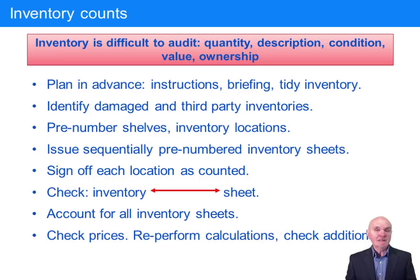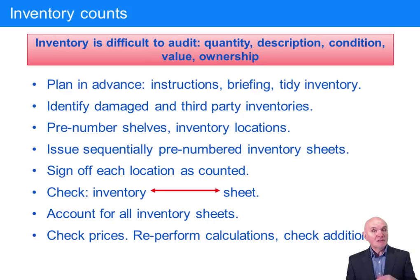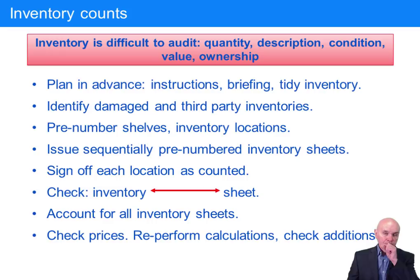A very common type of exam question is what auditors should do if they're asked to attend and observe a physical stock take. Many businesses try to keep a book stock, but really the best evidence you can get about the inventory which is truly present at year-end and its condition is to do a stock take at year-end — let's say on the 1st of January. This is nearly always assigned to the most junior member of the team, as the 1st of January is New Year's Day and not many people want to work then, and the stock is very often out of doors.